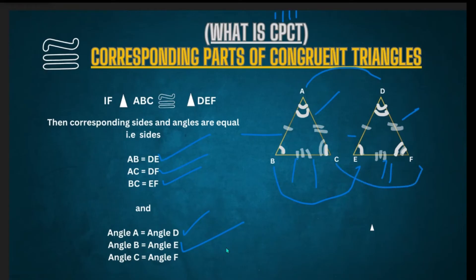That's what it means. CPCT means corresponding parts of congruent triangles, which means the sides and angles which are corresponding, they are equal. That's what CPCT means.